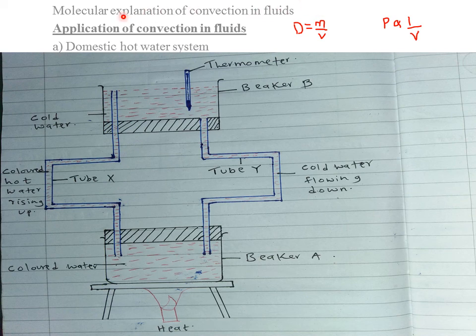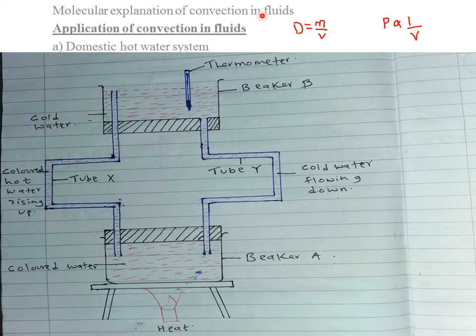Today we'll first discuss the molecular explanation of convection in fluids. Molecules in fluids are further apart and have negligible cohesive forces — that is the force of attraction between molecules of the same kind. Heating a fluid increases the kinetic energy of the vibrating molecules and their random movement. When we heat particles of matter, they gain kinetic energy, causing the particles to vibrate or move from one region to another.